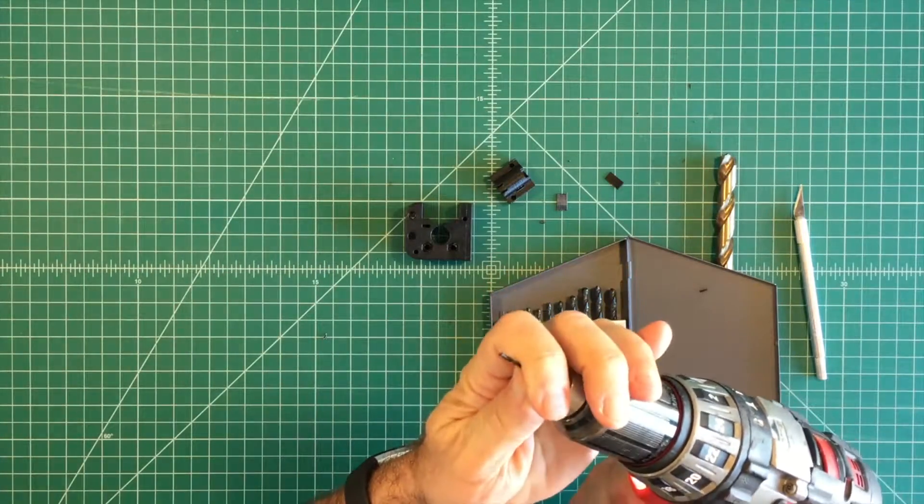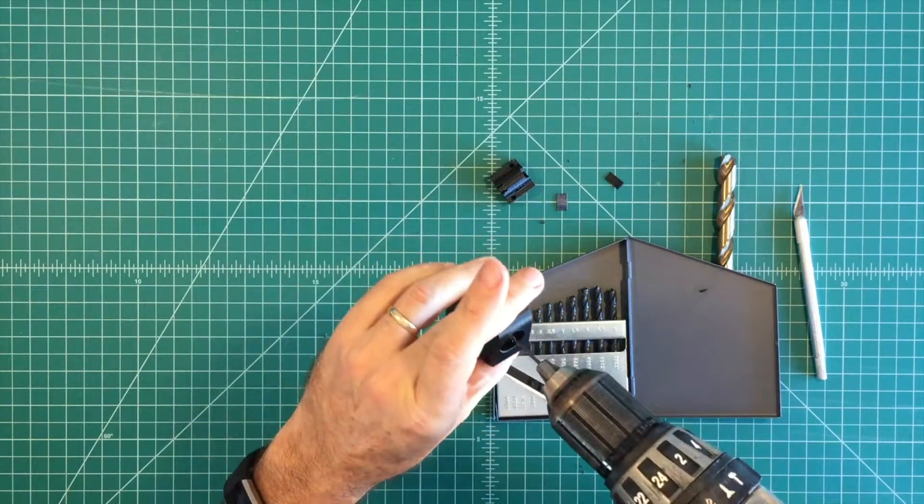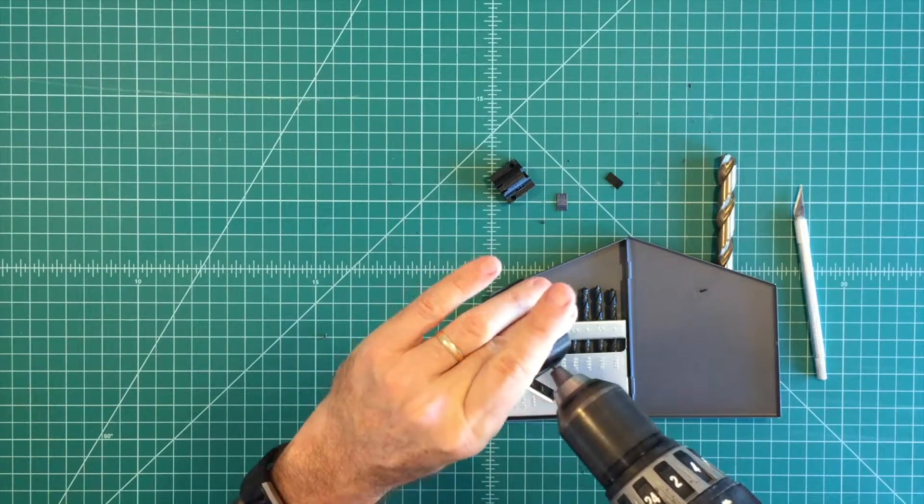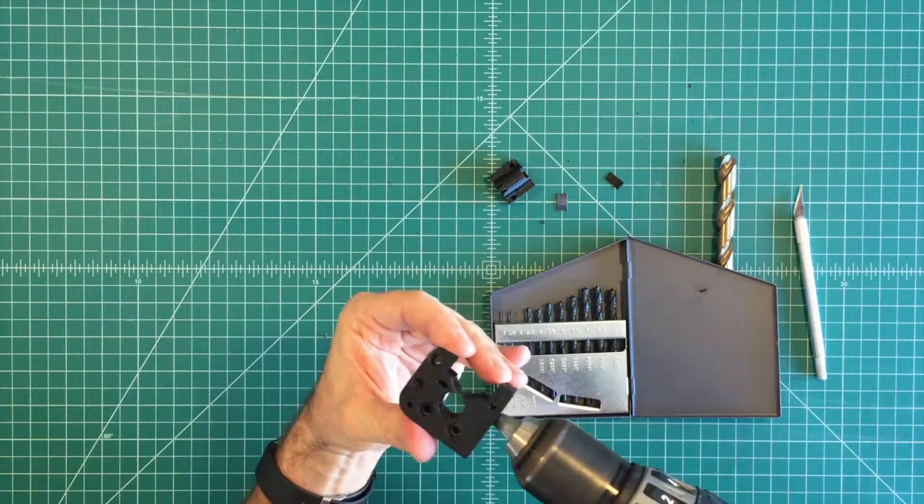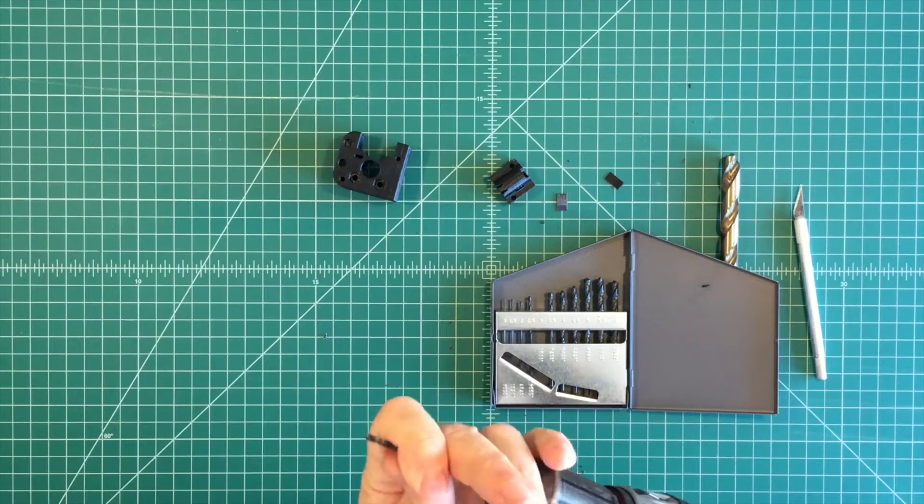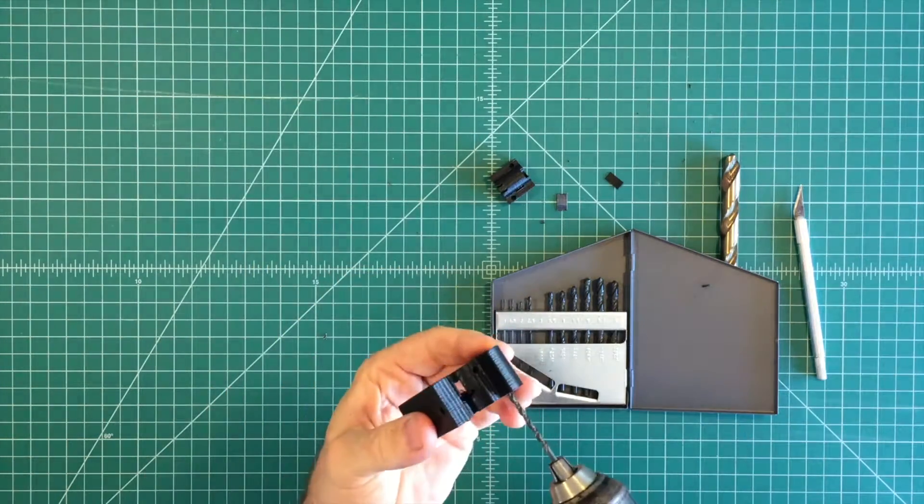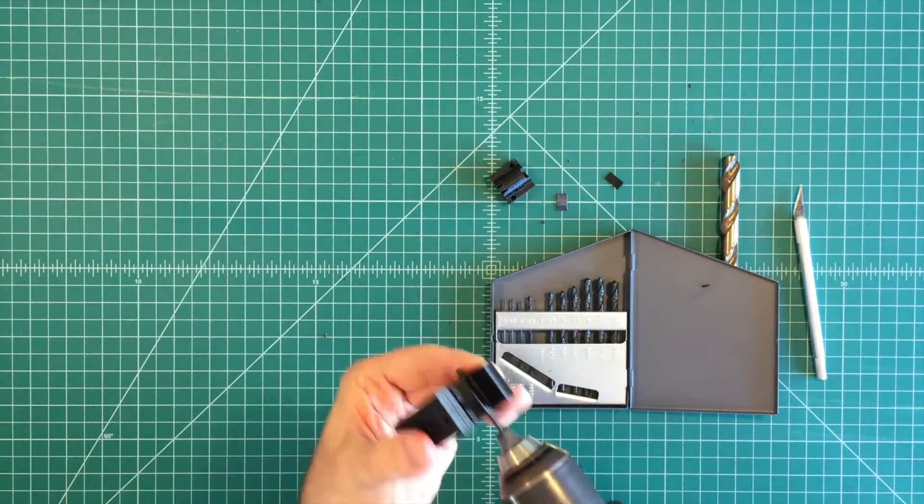Use a 2mm drill bit and reamout the filament guide hole from both directions. Next use a 3mm drill bit and clean out the motor mount holes and idler screw holes.